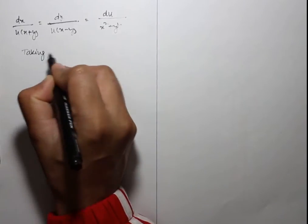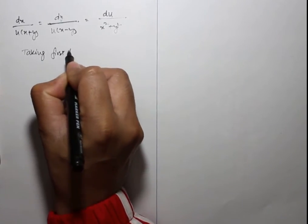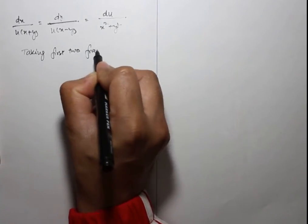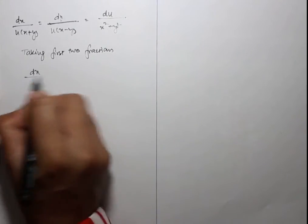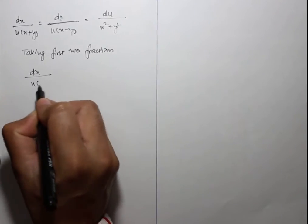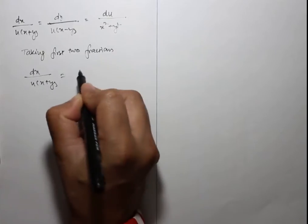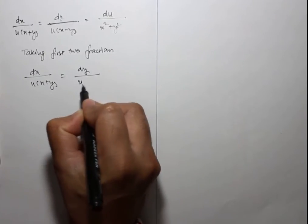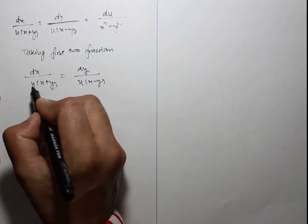Taking the first two fractions: dx/(u+x+y) = dy/(u+x-y). Cross-multiplying gives x dx - y dy = x dy + y dx.